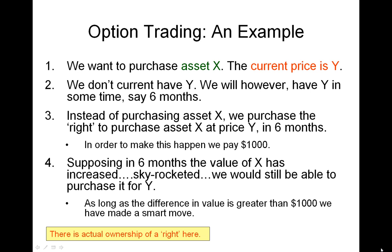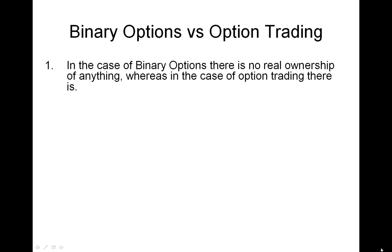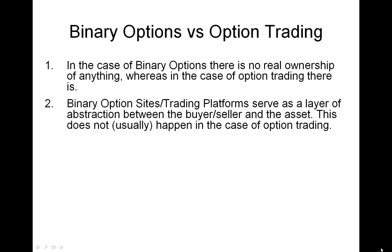To make it more clear, let's directly contrast the differences between binary option trading and option trading. In the case of binary option trading, note that there is no real ownership of anything — we never really own an asset. Whereas in the case of option trading, we indirectly own the asset in the sense that we own the right to buy or sell it. Binary option trading sites serve as a layer of abstraction between the buyer or seller and the actual asset. If we pick something like gold, we're never really buying or selling gold — we're putting or calling with respect to the asset.